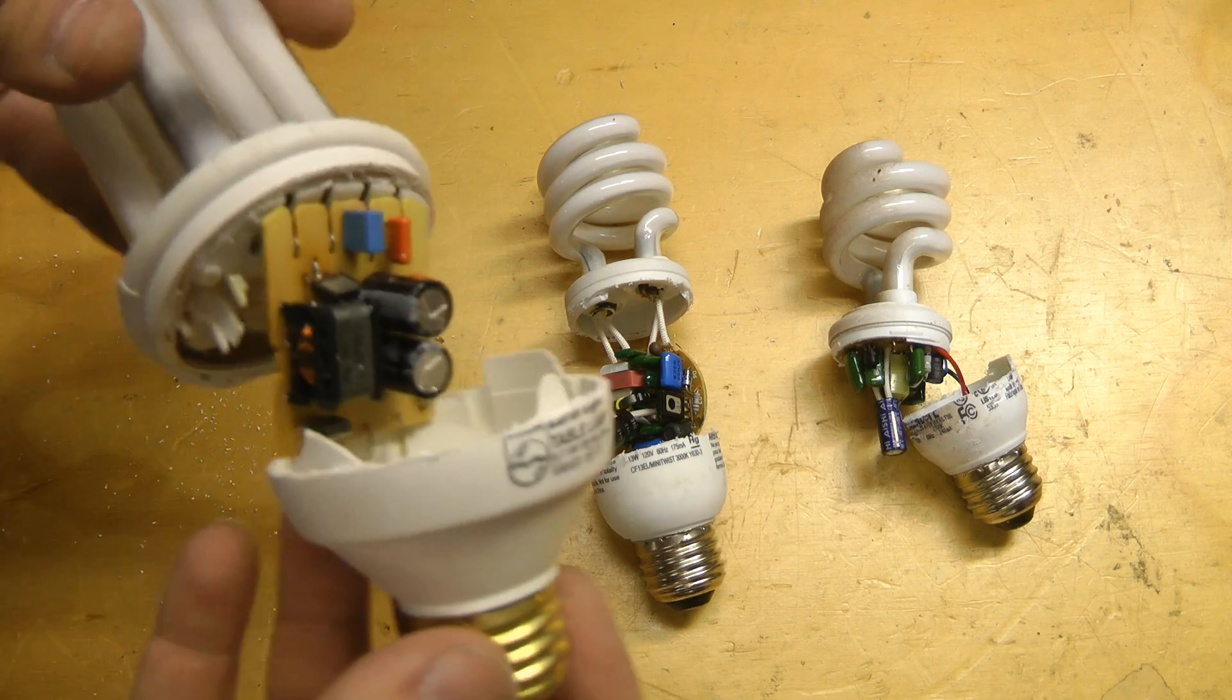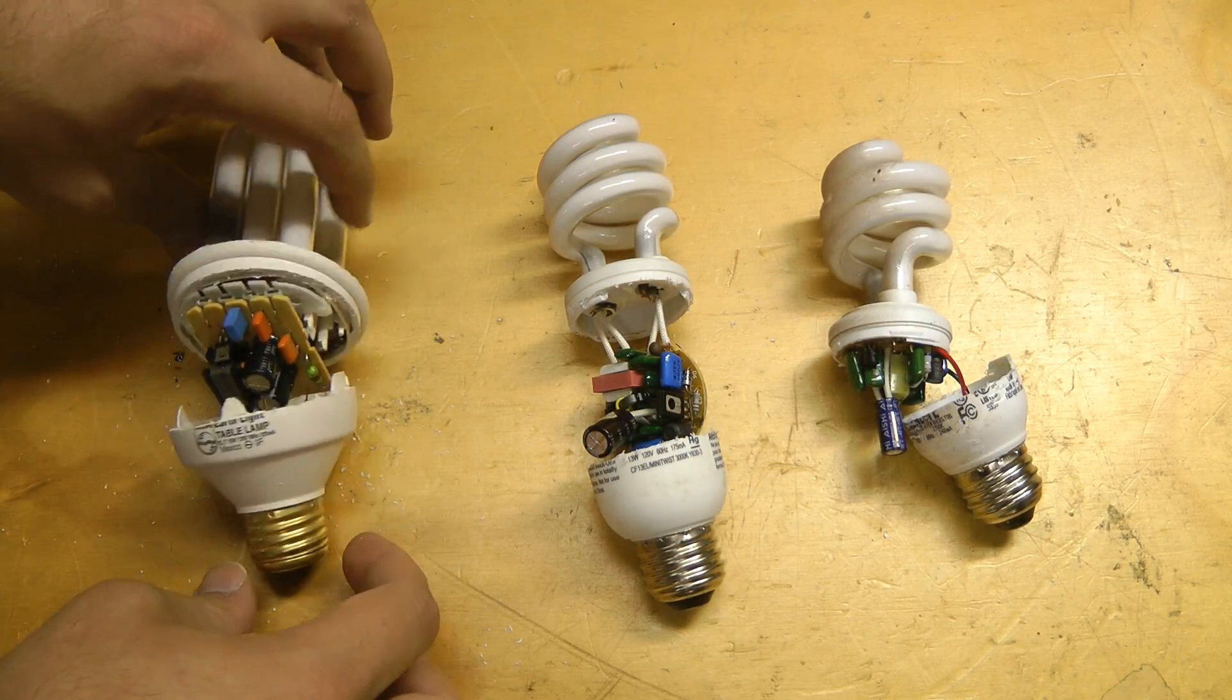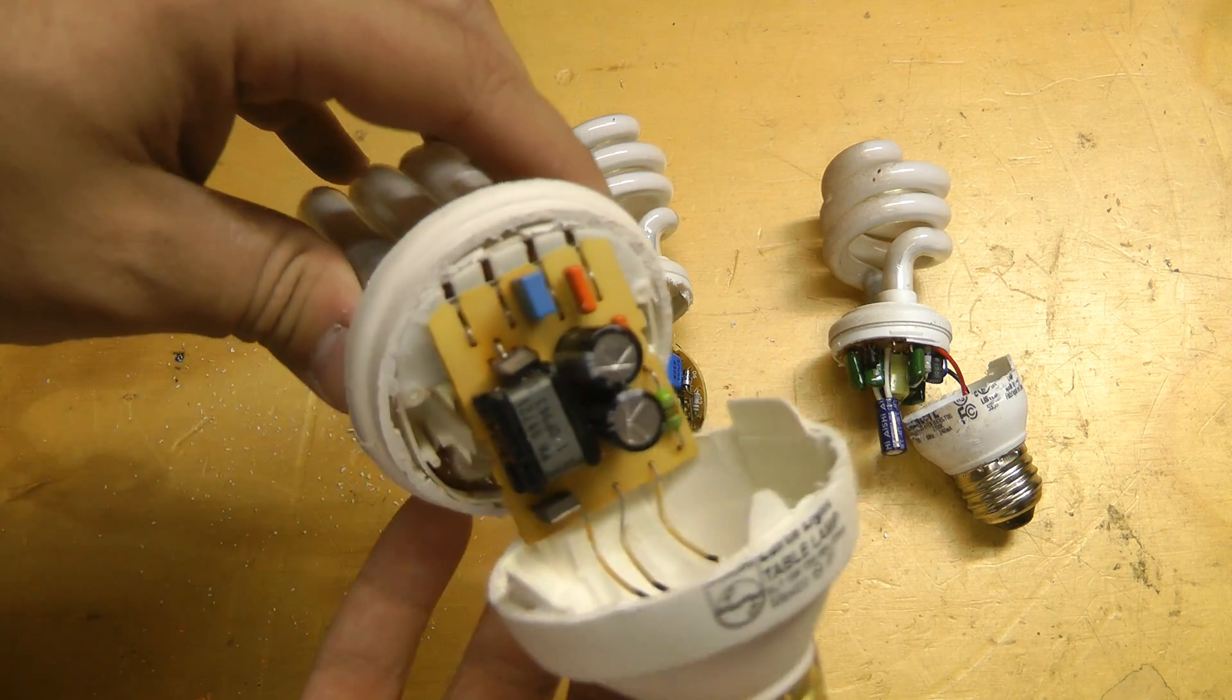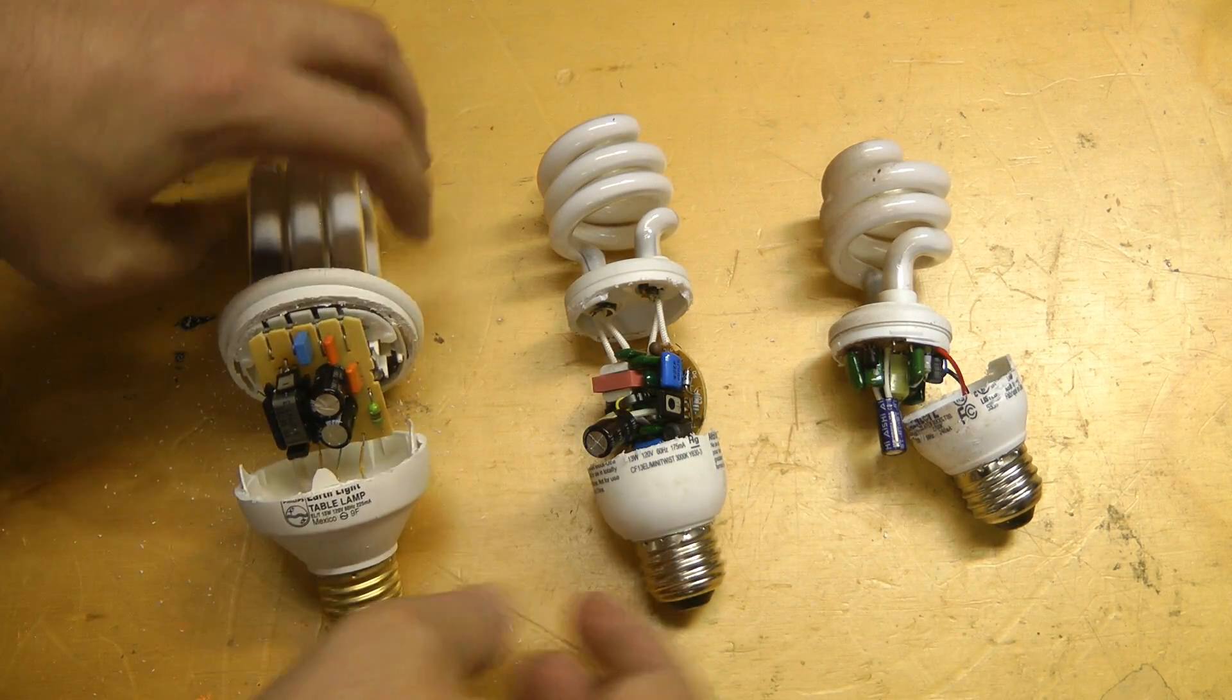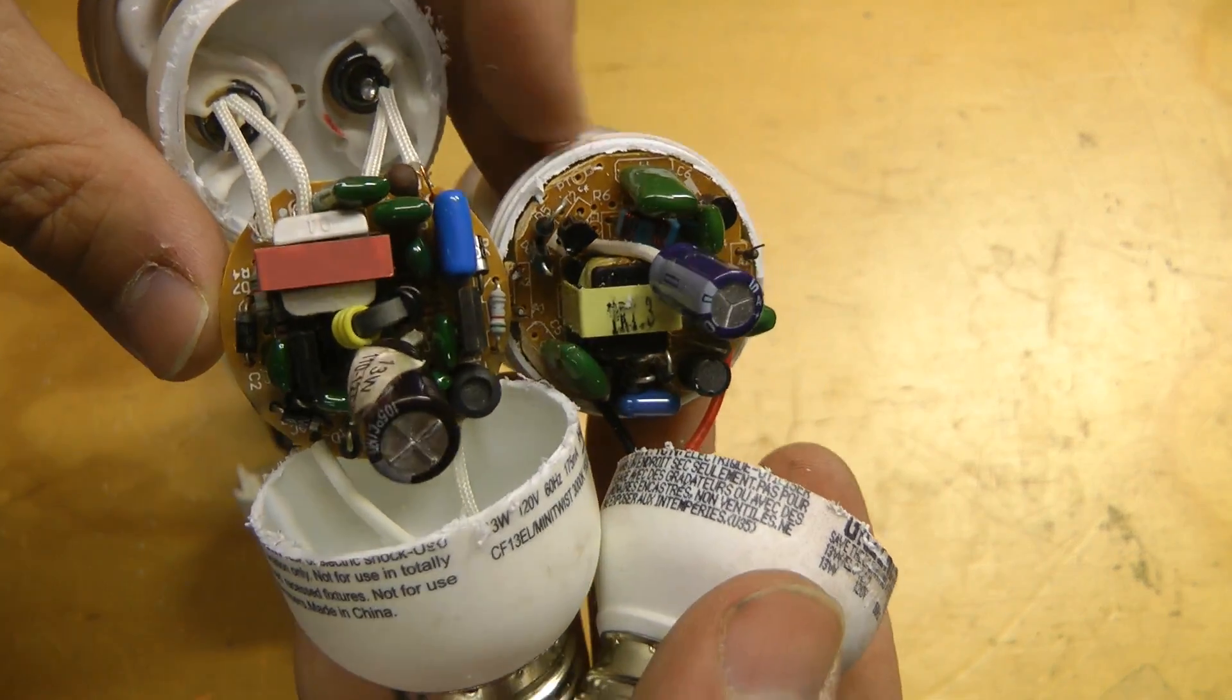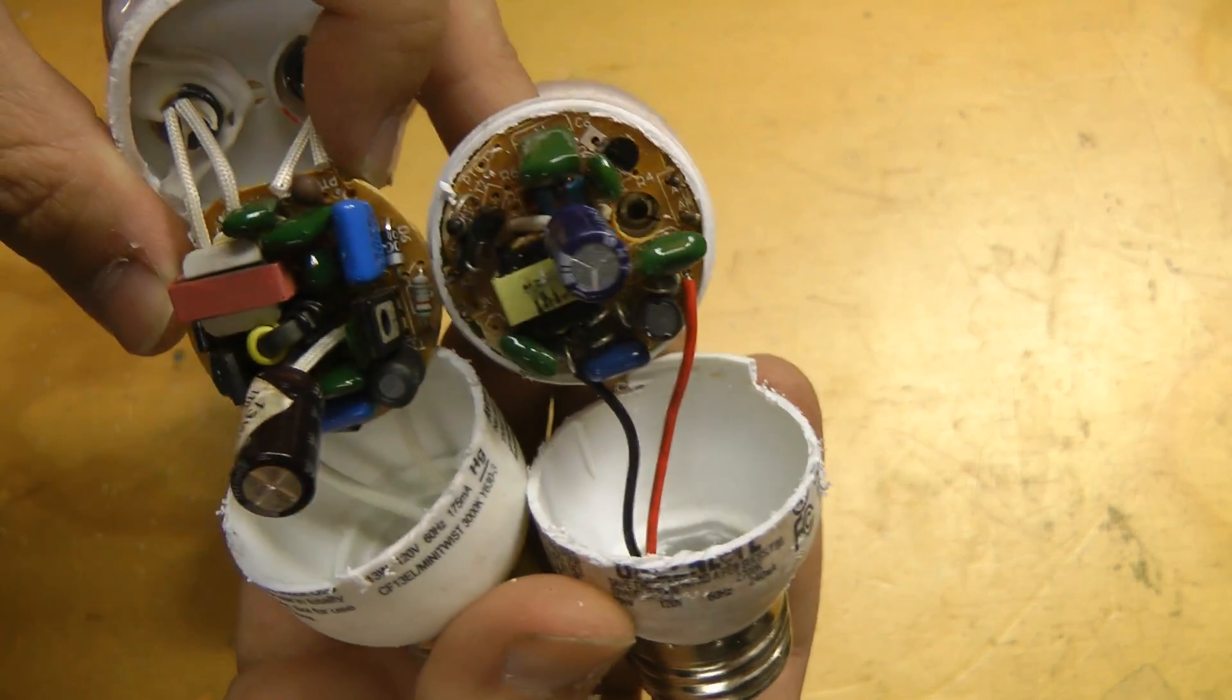These lamps usually come apart pretty easy. You just have to cut around the outside of the ballast and then it pulls apart. We definitely see the older lamp actually, the ballast actually looks a lot simpler in this one compared to the modern ones, which are much more crammed and have a much more, I guess, Chinese bodgey style of construction.